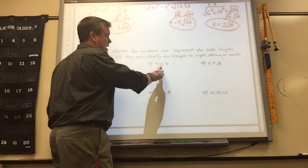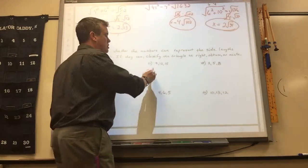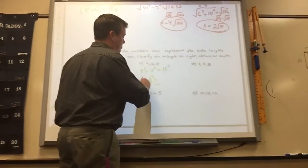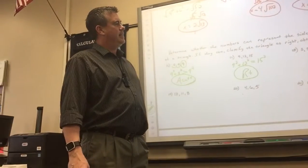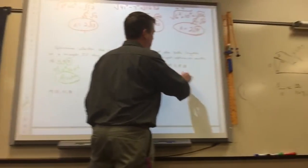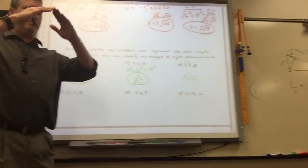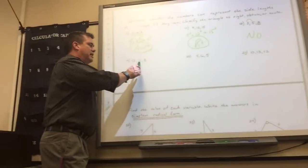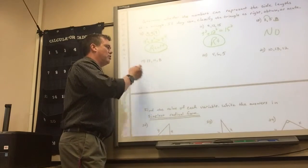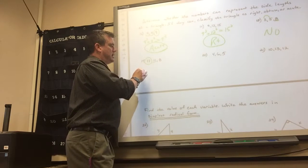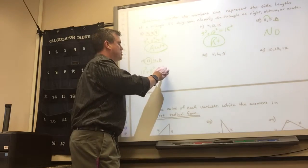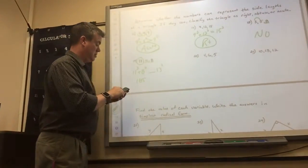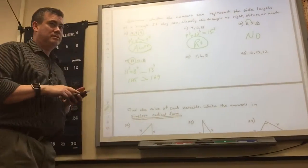Problem 17: 9 and 12 is more than 15; 12 and 15 is more than 9; 9 and 15 is more than 12 — so it forms a triangle. 9 squared plus 12 squared equals 15 squared exactly, so it's right. Problem 18: 3 and 5 only adds up to 8 — that's not a triangle because it wouldn't form a point. Problem 19 does form a triangle. This one isn't written in order — 13 is the hypotenuse. 11 squared plus 8 squared is 185; 13 squared is 169; 185 is greater, so that's acute.